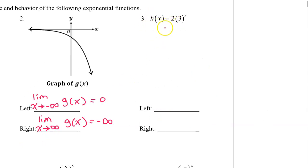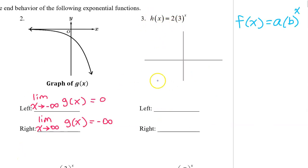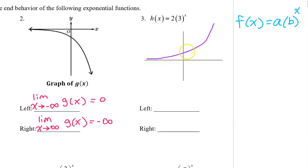For number three, the key is to draw your own picture. The model for an exponential function is f of x equals a times b to the x. Because the a value is positive, that tells us that h of x will be above the x-axis. Because the b value is greater than one, that means it is an exponential growth function, which will be increasing from left to right. So as we head towards the left, h of x will be approaching the x-axis asymptotically. Therefore, the limit as x approaches negative infinity is zero.